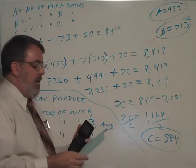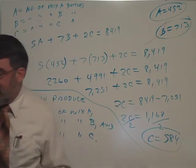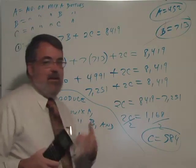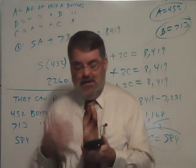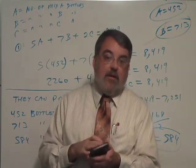And I get 8,419 ounces of apple juice. And because I made up this problem, I knew what answers I was supposed to get. I know the rest of them are going to work, but that's how you would check it.